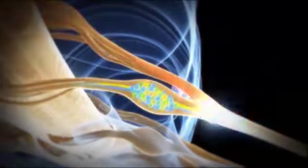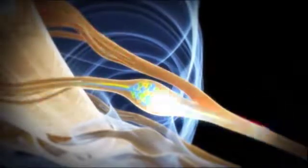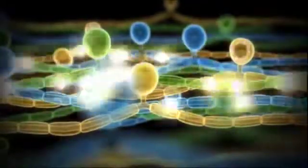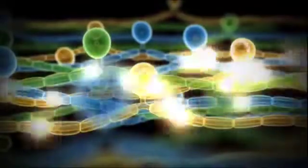In chronic pain states, cell bodies in the DRG become hyperexcitable, causing neurons to fire abnormally. Research has shown that electrical stimulation of the DRG can decrease cell excitability and modulate the sensation of pain.